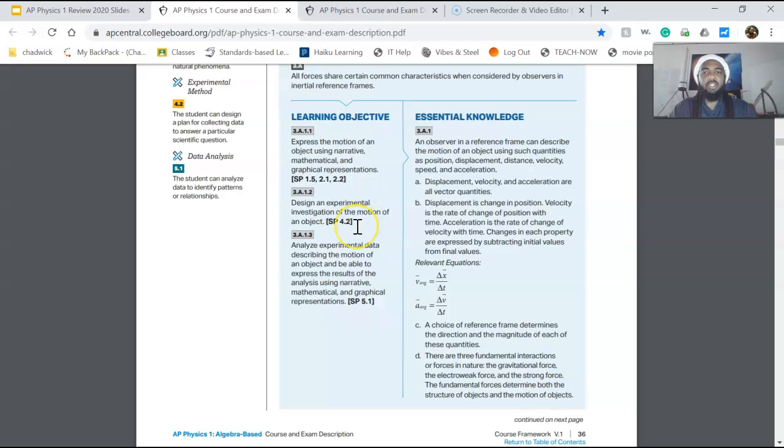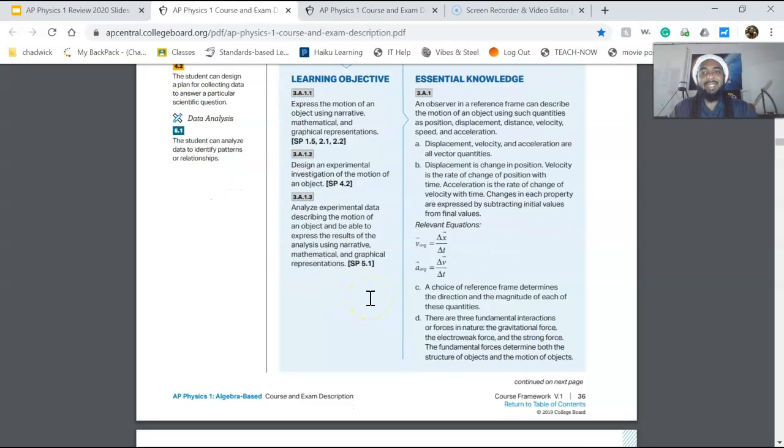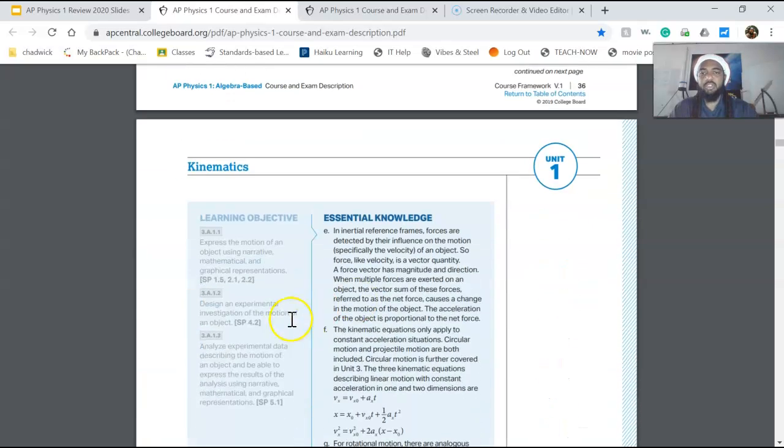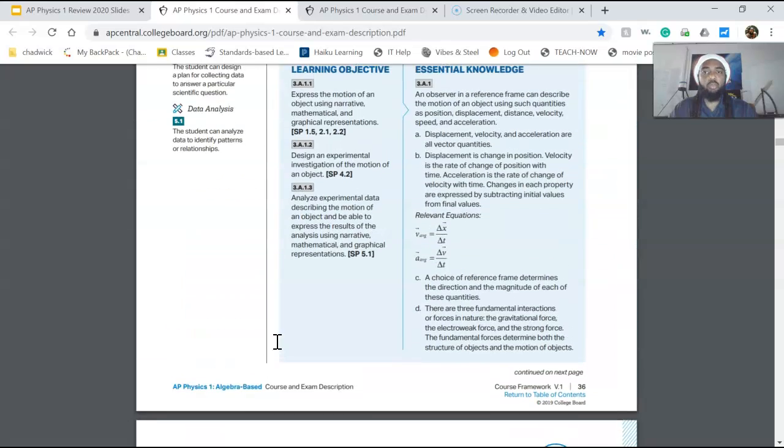There's a learning objective about being able to design an experimental investigation of the motion of an object and analyze experimental data again on motion of an object. And these are the three learning objectives. They're just repeated here and that's it for unit 1.1.